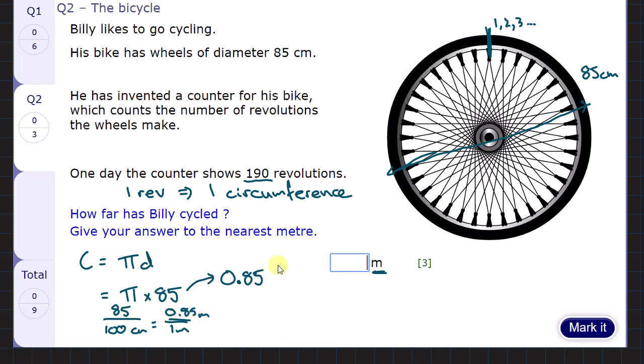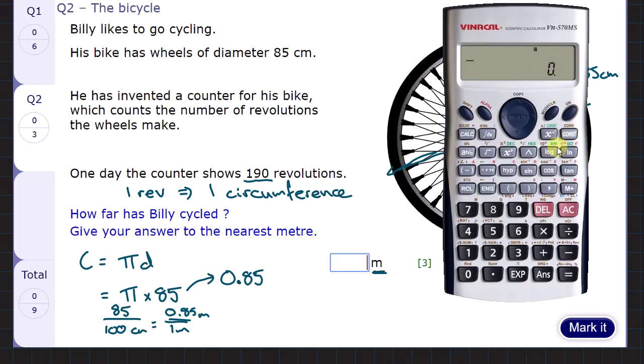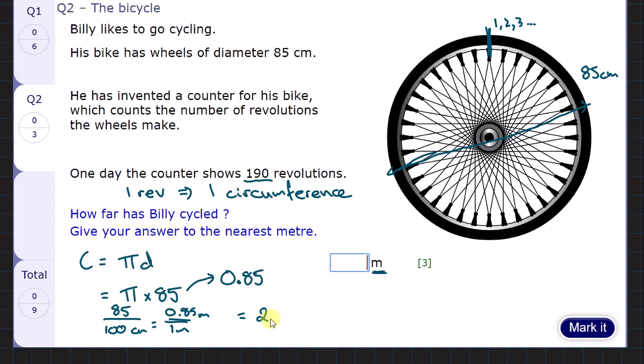We're now calculating. That's the number I'm going to use when I stick it in the calculator. I take my calculator and I'm going to do pi times 0.85. Press answer. And I've got 2.67 metres.